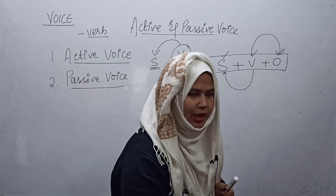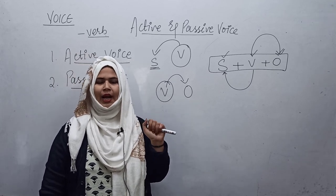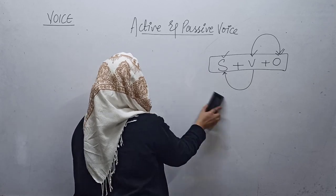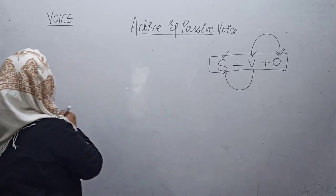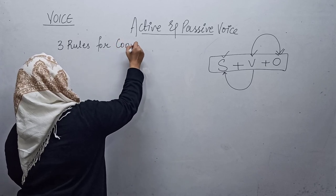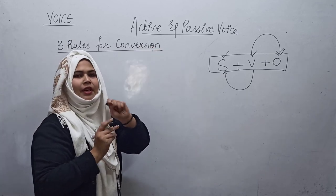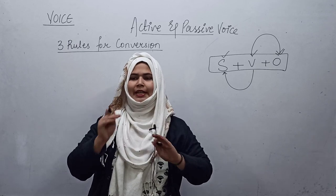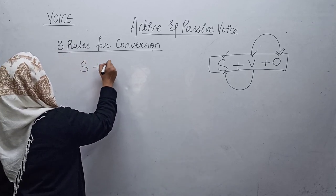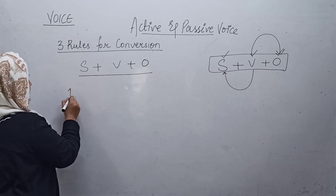The question comes: how to convert from active to passive, or vice versa, from passive to active. This is something very easy to understand. I am going to give you three basic rules for the conversion — conversion from active to passive. You have to keep the sentence structure S-V-O very clear in your head.